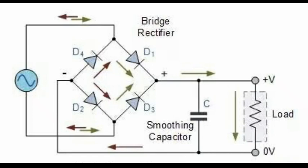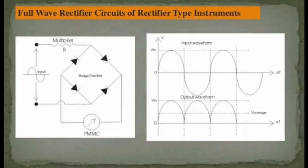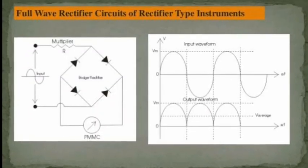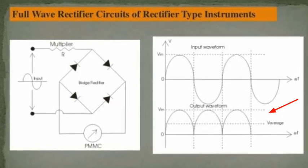This is the AC and DC in the bridge circuit. The current flows through the new circuit. Then we have a full wave, pulsating, full wave DC output from the bridge rectifier.